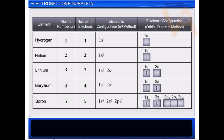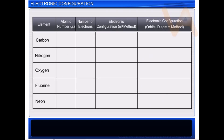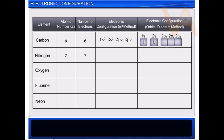However, conventionally we always fill 2px, 2py, and 2pz in that order. Carbon has six electrons. The first four electrons fill the 1s and 2s orbitals. The remaining two electrons will go to any two of the three 2p orbitals in accordance with Hund's rule, and these will have parallel spins. Nitrogen has seven electrons. The first four electrons fill the 1s and 2s orbitals, and the remaining three electrons go to the three 2p orbitals in accordance with Hund's rule, and these will have parallel spins.